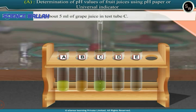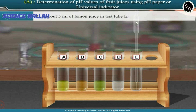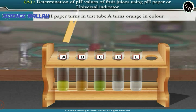Take about 5 ml of grape juice in test tube C. Take about 5 ml of sweet lemon juice in test tube D. Dip small strips of pH paper into each of the test tubes A to E. Observe the color developed on the pH paper and note down the color in the observation table.